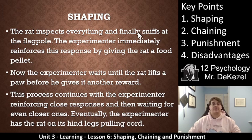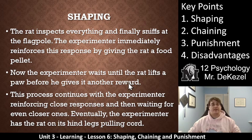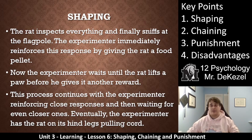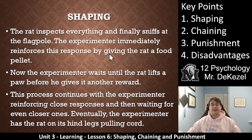The rat inspects everything, sniffs at the flagpole — we reinforce this. Now that the rat is hanging around the flagpole, we wait until the rat lifts a paw towards the flagpole — here you go, you get another reward. This process would continue with the experimenter reinforcing close responses and then waiting for even closer ones: you lifted a paw, now you have two paws up, now you touch the cord, now you sniff the cord, now you bit the cord, now you're standing on hind legs with the cord in your mouth, and so on. Only rewarding the behavior that you want. Eventually, the experimenter has the rat on its hind legs and pulling at the cord.